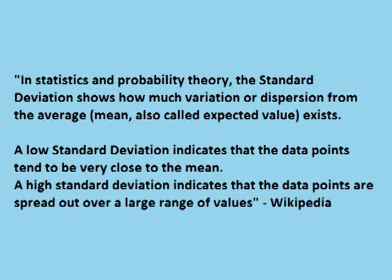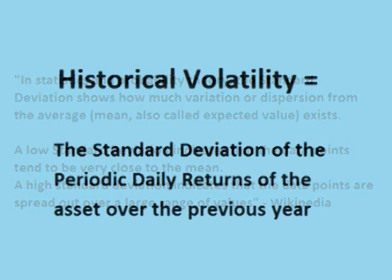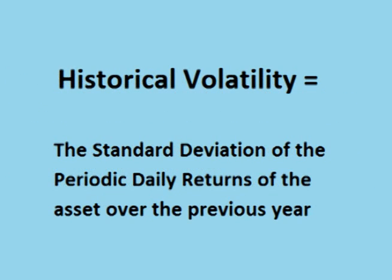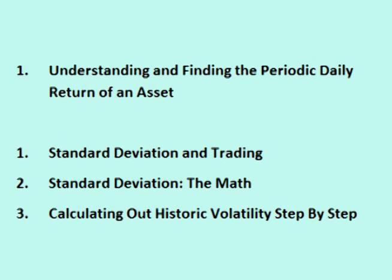Historic volatility refers to the standard deviation of the periodic daily returns. The standard deviation shows the rate of dispersion, or how spread out the periodic daily returns are from the average of all the periodic daily returns. In short, historic volatility is the standard deviation of the periodic daily returns over a one year period. For more on this, please watch my video on the periodic daily return and my three video series on the standard deviation.